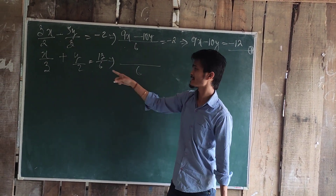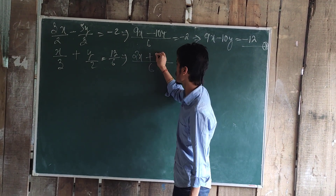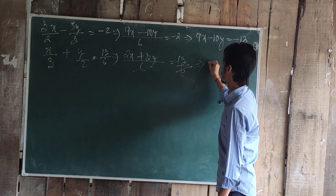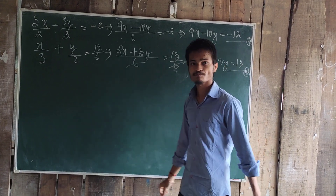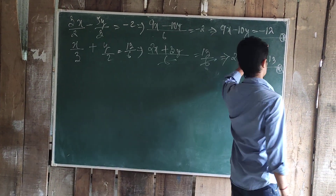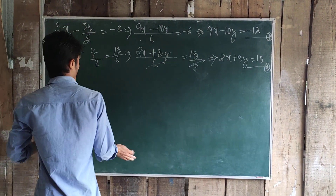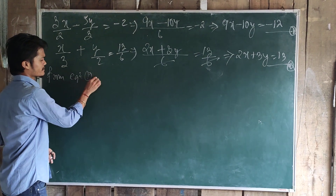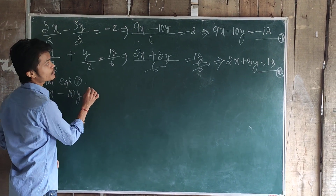Taking the LCM of 3 and 2, which is 6. Multiplying through gives us 2x plus 3y is equal to 13 — this is equation number 2. So after reconstructing the given linear equations, we have equation 1: 9x minus 10y equals minus 12, and equation 2: 2x plus 3y equals 13. Now we are going to solve by the substitution method as we did in the previous example.